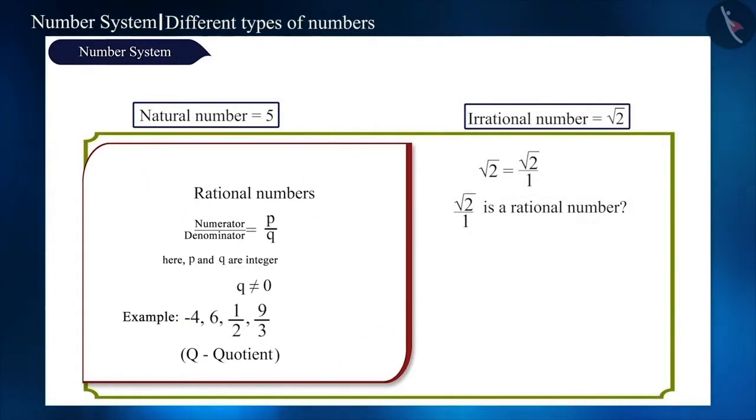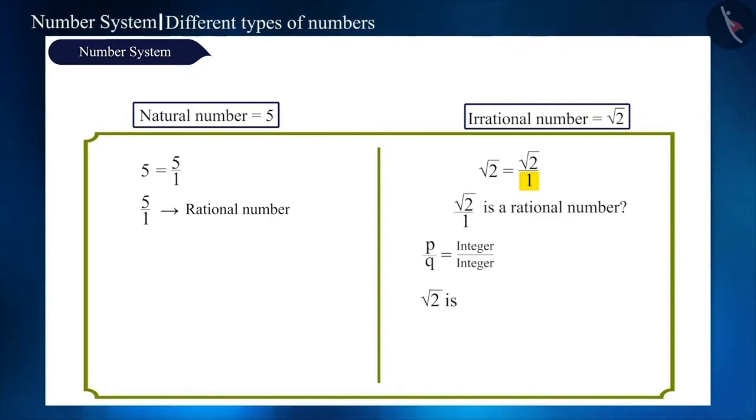According to the definition of rational number, both p and q must be integers. Q, which we have taken as 1, is an integer but root 2 is not an integer. So, we cannot represent it as a rational number.